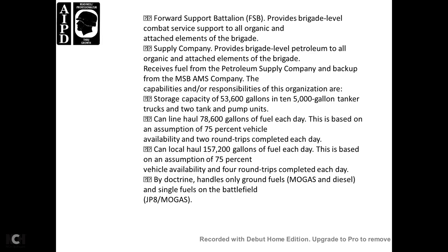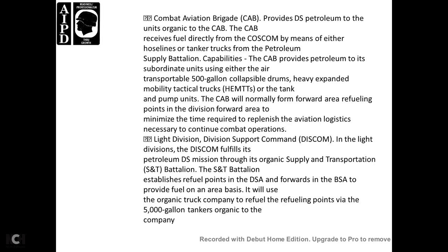By doctrine, the unit handles ground fuels — MOGAS, diesel, and single fuel for aviation. The combat aviation brigade receives direct petroleum support for its organic elements. The brigade receives fuel via hose line and tank trucks, with petroleum split-down capability. The aviation brigade is provided petroleum support including air-transportable 5,000-gallon collapsible drums and heavy expanded mobile tactical trucks. The combat aviation brigade will normally operate forward refueling points with minimum turnaround time, supporting aviation logistics for combat operations.